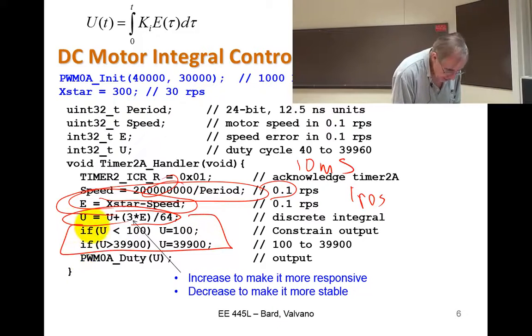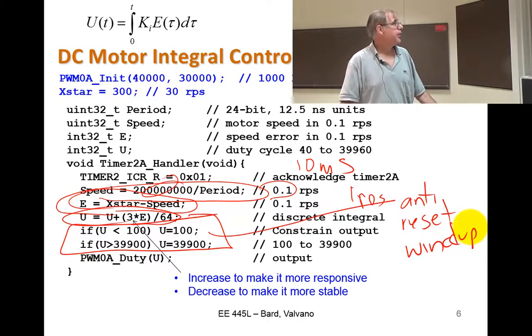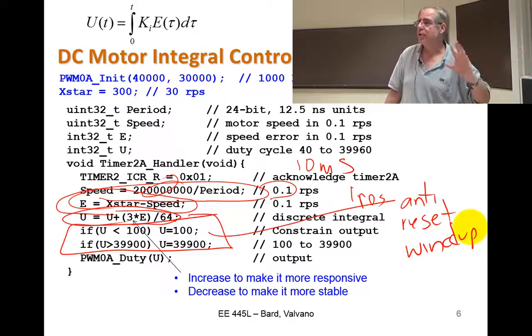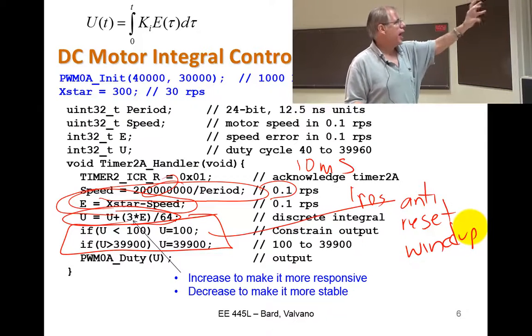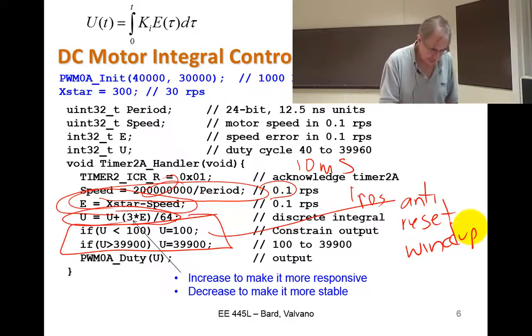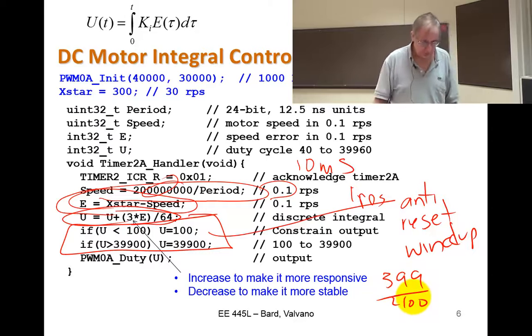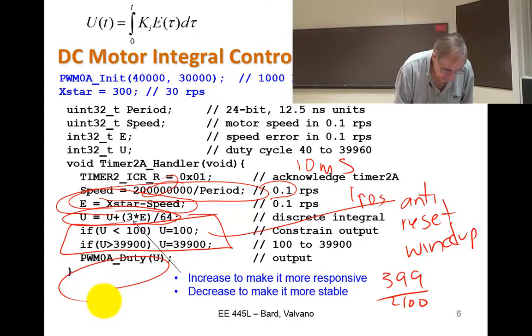This has got a fancy word in the control system. This is called anti-reset windup, which is just a fancy way of saying don't be stupid. Don't make it more than 100% or less than 0%. And this particular duty cycle doesn't actually get all the way to 100%. But 39 over 400 is pretty close to 100%. And then I output a new duty cycle. And we saw this function last time.